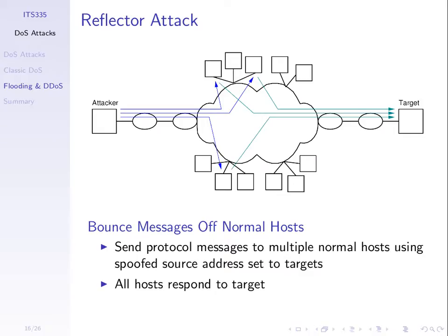We can move to a more powerful attack: send the message to normal computers on the internet — just random computers — with a fake source address where the source is that of the target. We send a ping echo request to one of these computers; it receives it, looks at the source address which was the target's IP address, and therefore sends a reply to the target. The attacker sends similar pings with this fake source address to many computers on the internet, and they all reply with a ping reply to the target. This is reflecting the pings off these normal hosts — a typical form of denial of service attack.